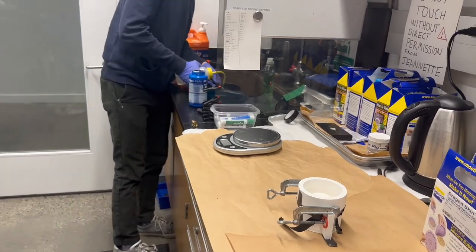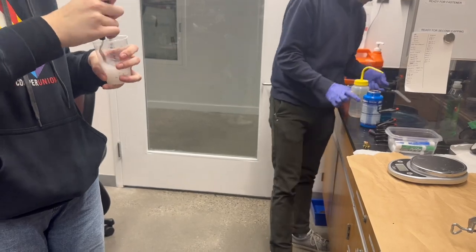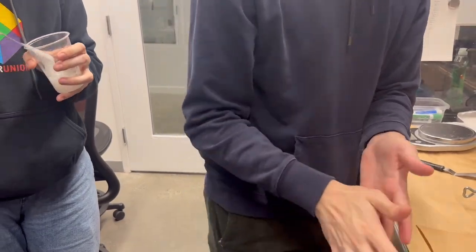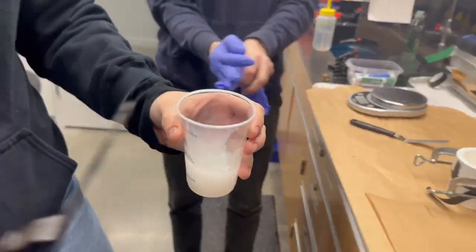After that, we thoroughly mixed part A and B. This is very important to make sure that you get into the corners of the cup and that all of the part A and B are mixed very thoroughly. Otherwise, you may not get good curing capabilities or properties from the silicone.